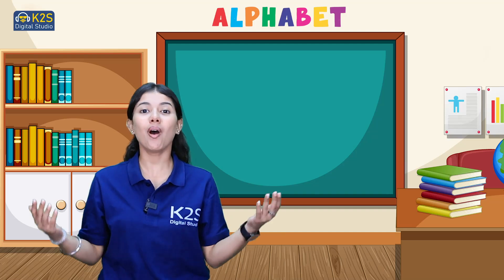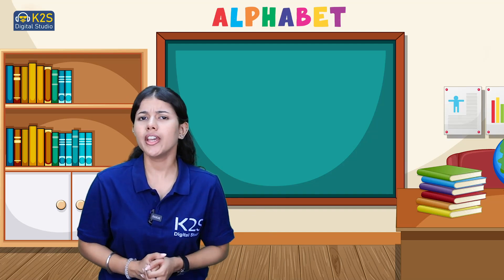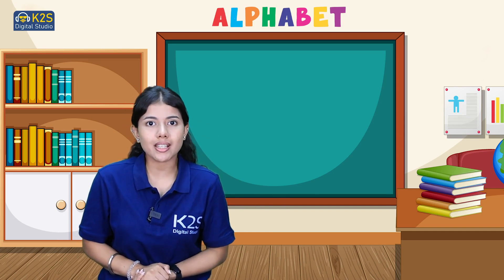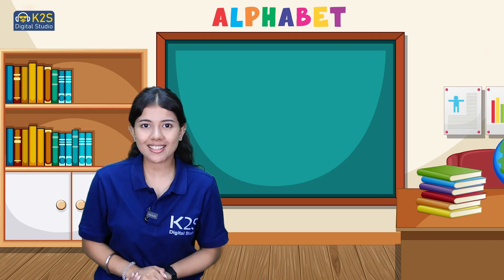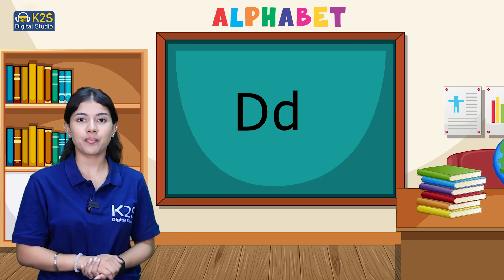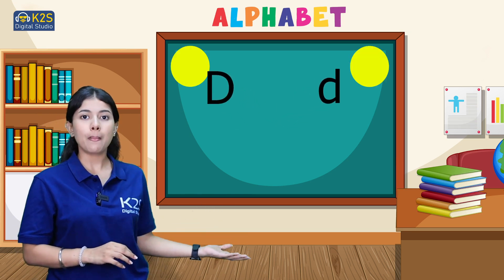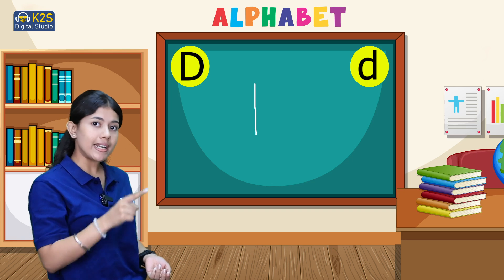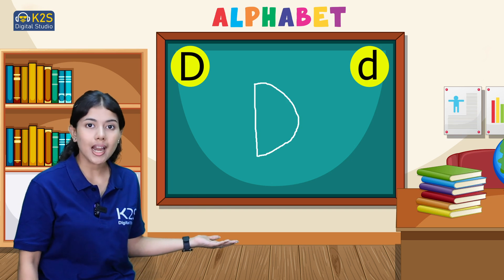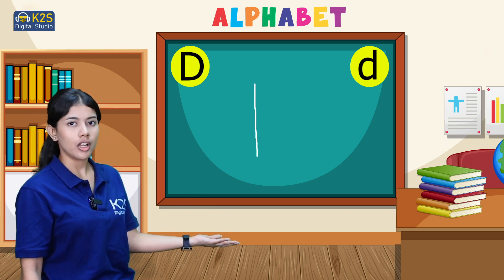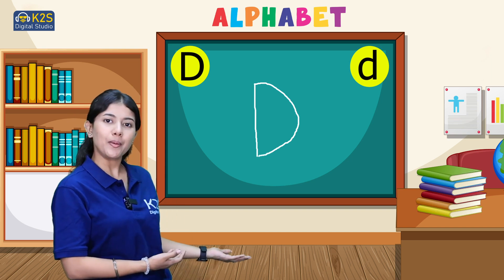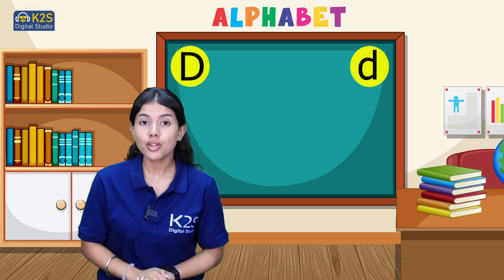Hello champs, how are you all! Here we are back with the fourth letter of our alphabet series. Do you know what it is? It's letter D. We write this letter by drawing a standing line and then a curve. By joining them, we get the letter D. Perfect!